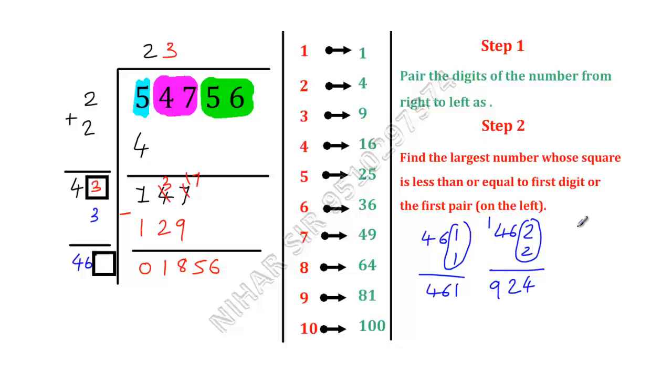Now let us try 463 times 3, 3 times 3, 9, 3 times 6, 18, 3 times 4, 12 plus 1, 13, 1, 3, 8, 9. That is again smaller than 1856.